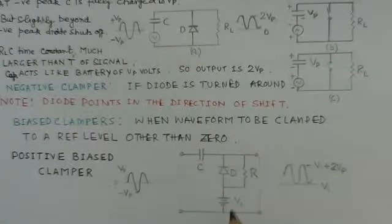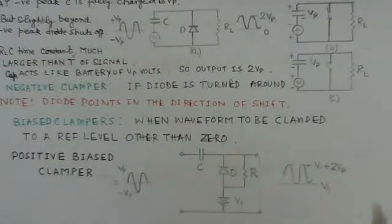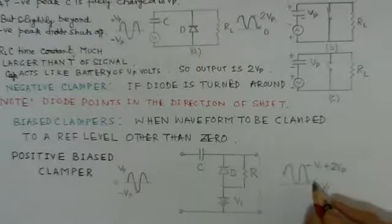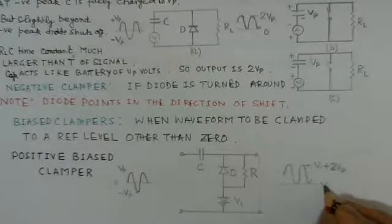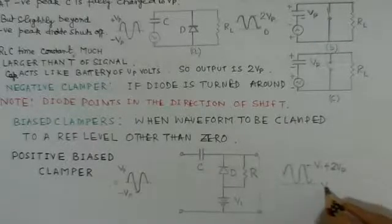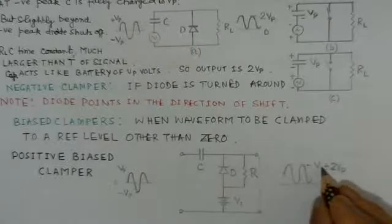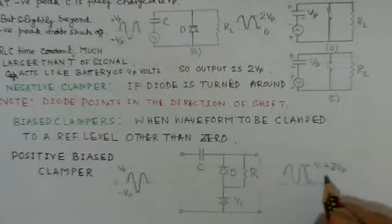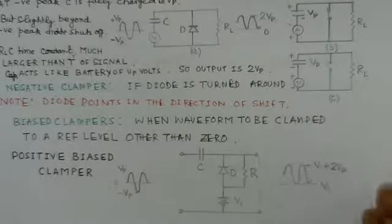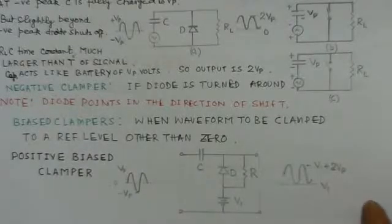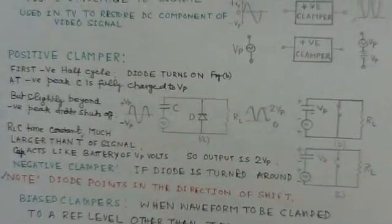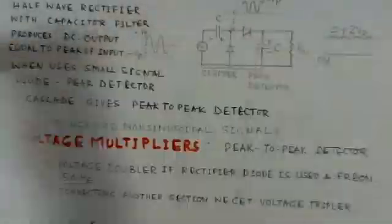What we observe here is this input here, and you will notice here the output would be a positively biased clamper, so it will be at a V1 level. The lower level of the output waveform will be at V1 and the upper peak of the waveform will be V1 plus twice Vp. So this waveform has been clamped to the level as desired by the circuit.